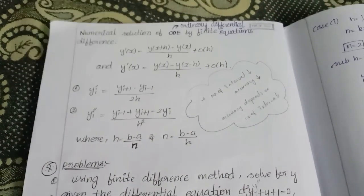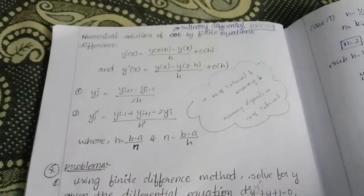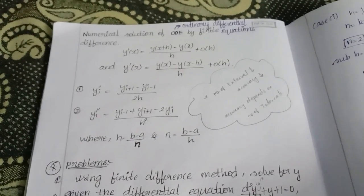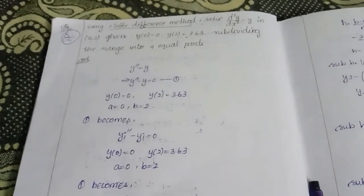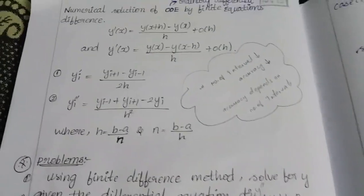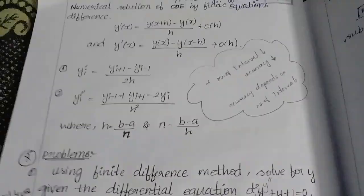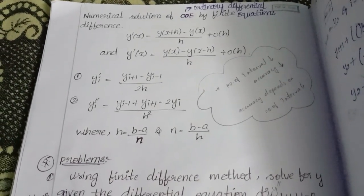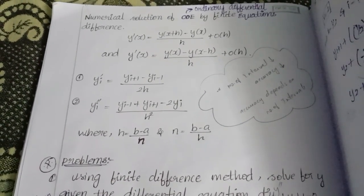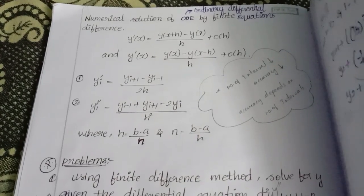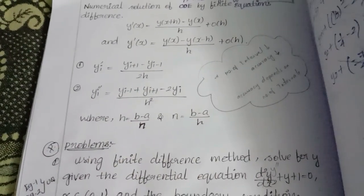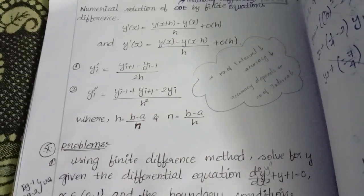Today we are going to see the numerical solution of ordinary differential equations — specifically problem number two. We need to know the formulas: y'_i = (y_{i+1} - y_{i-1}) / (2h), and y''_i = (y_{i-1} + y_{i+1} - 2y_i) / h², where h = (b - a) / n.